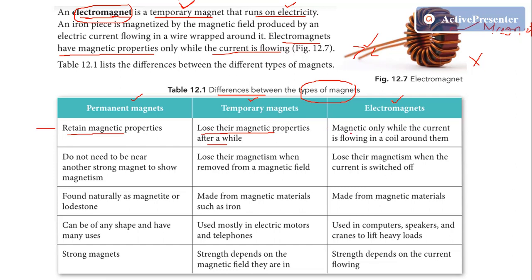Electromagnets are magnetic only while the current is flowing in the coil around them. As soon as you switch off the current, they lose their magnetism.